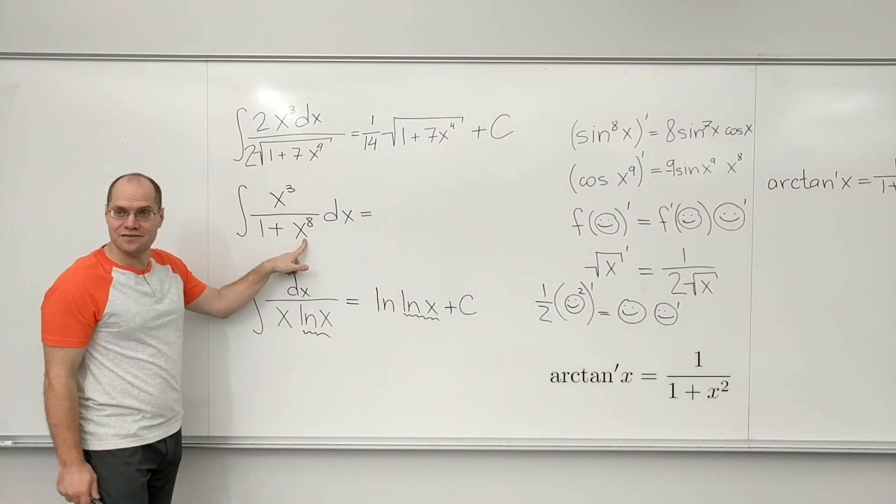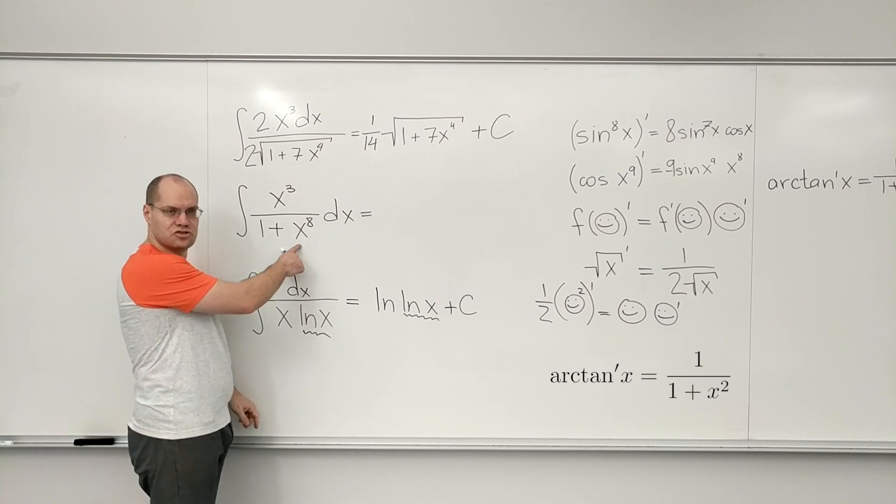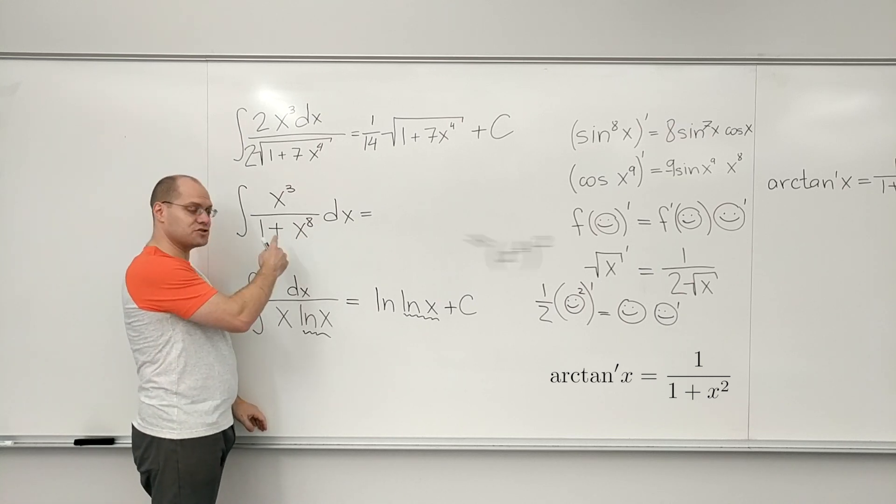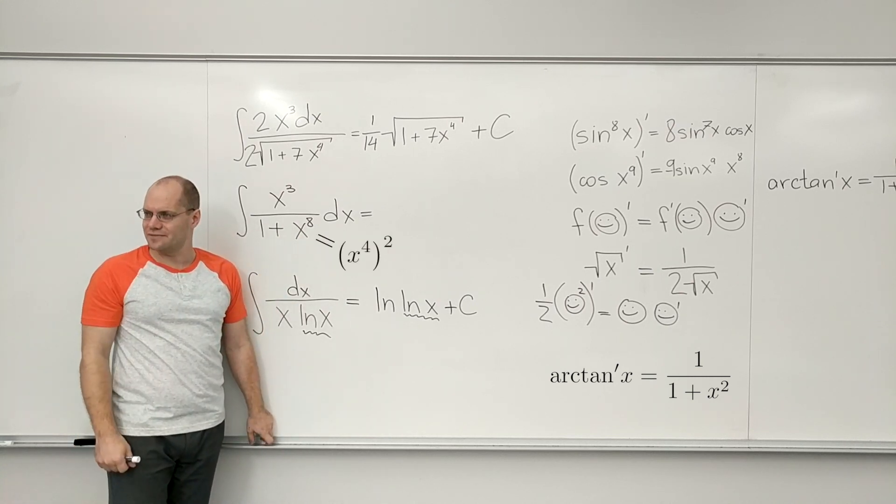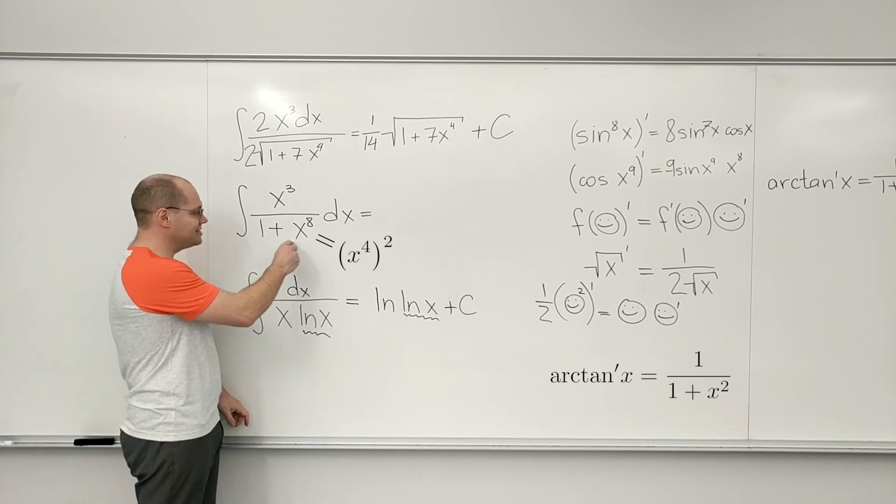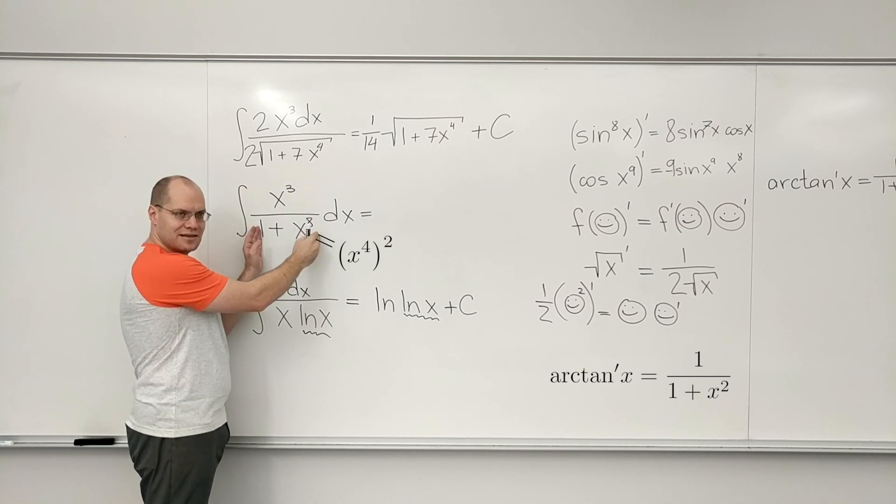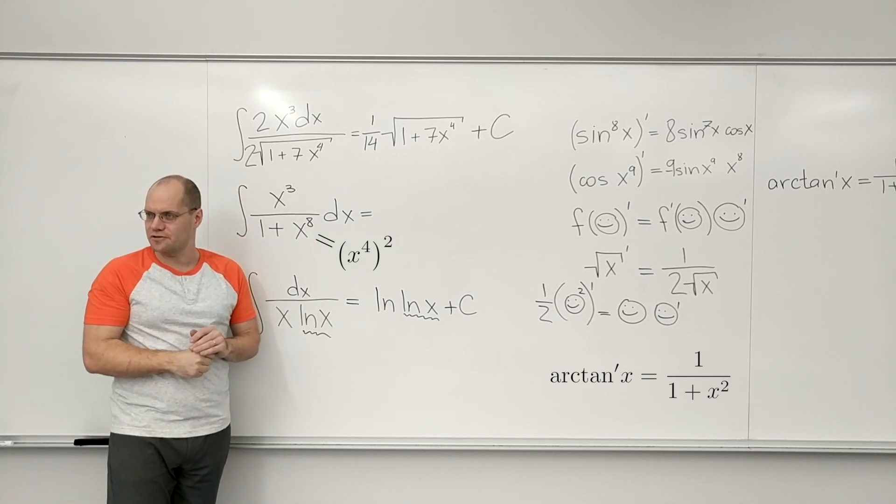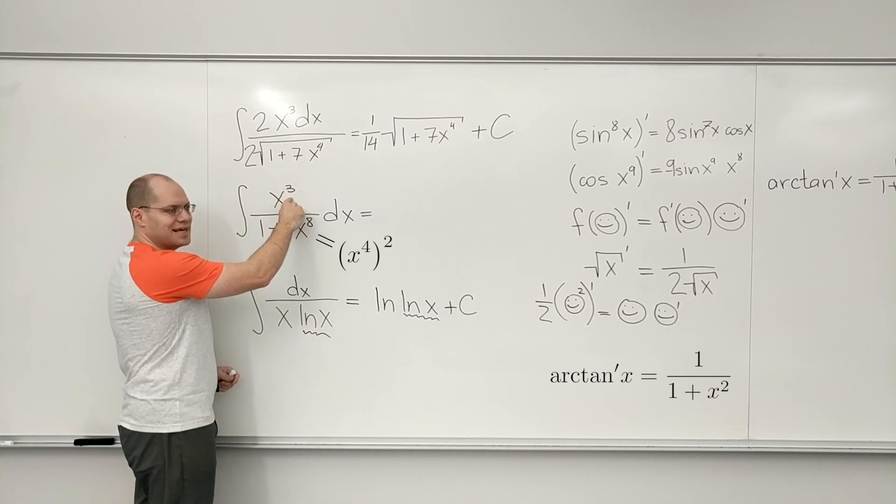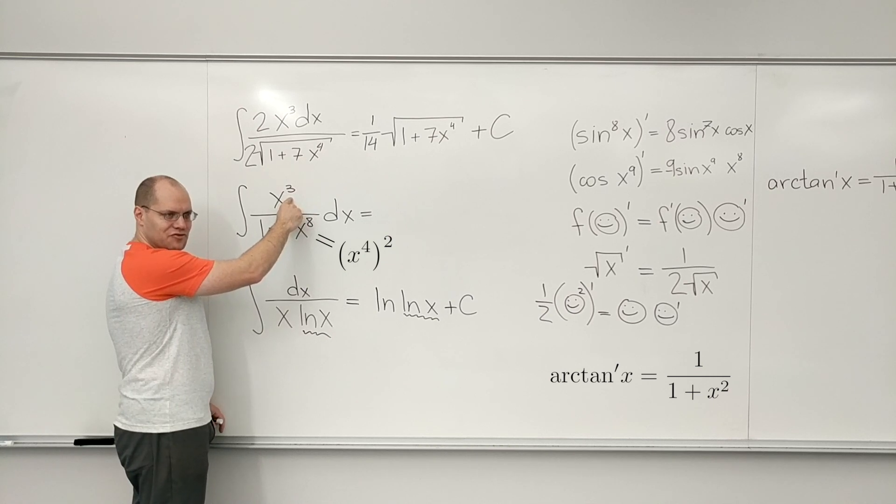And here, we kind of have it. But what is it squared? Well, it's x to the fourth squared. You guys are with me? So I see that. There could be another example where I would look at this and see a different structure. For instance, if this was a 7, maybe I'm running ahead of myself.